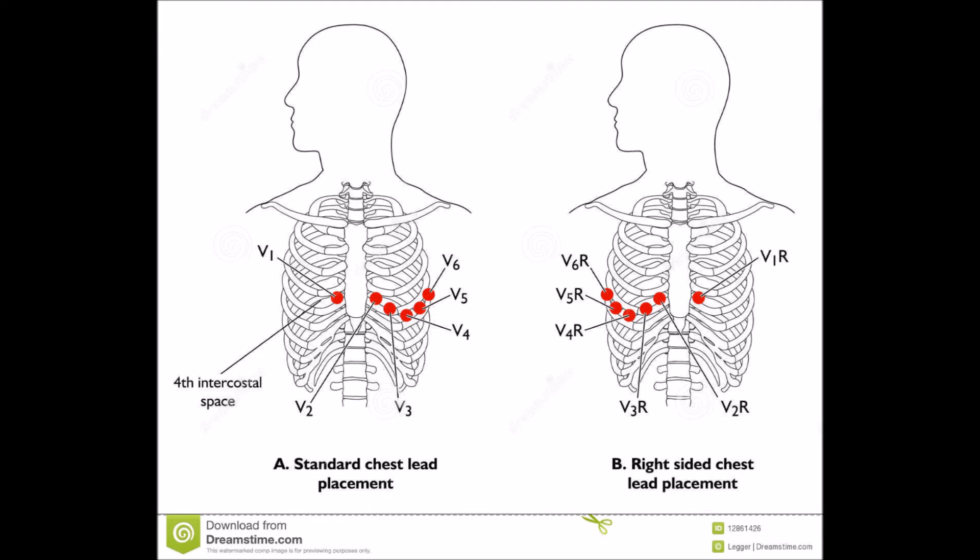Now these ECGs don't really take a lot of effort to learn how to interpret, but just as a quick pointer, you want to make sure that you pay particular attention to V3, V4, and V5. Those can really show you that right-sided ventricle, and that right ventricle can be your problem in an inferior wall MI because those patients are preload dependent.